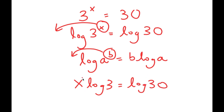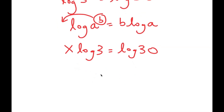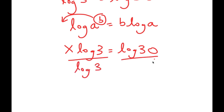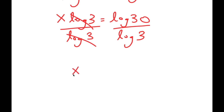Now that x is an actual term, I can solve for it by getting rid of this log 3. So I'm going to divide both sides by log 3. These two cancel out, and I get x is equal to log 30 over log 3.